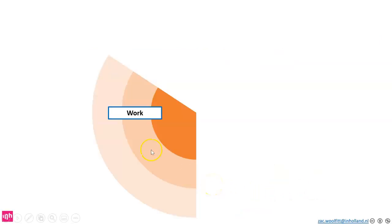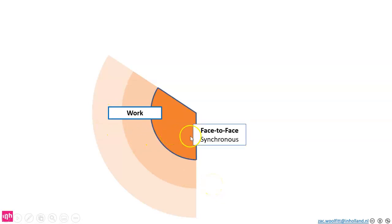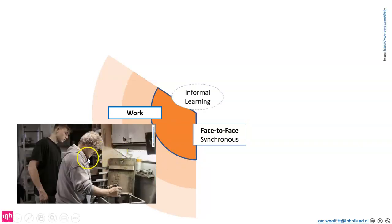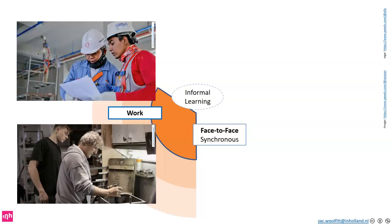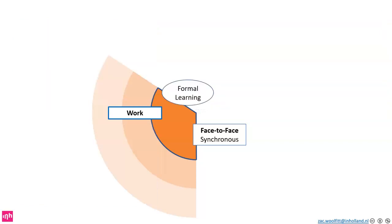Now we'll look at learning at work. We're going to start here in the center area — face-to-face and synchronous — that means you're learning informally at work. Quite a lot of learning happens in that context just by watching somebody, seeing what they're doing, picking up information and observing. That's informal learning at work — just interacting with somebody, asking some questions, no official training, but you're learning as you go.